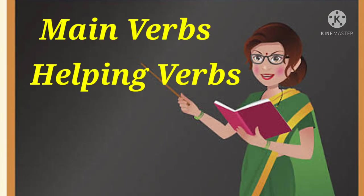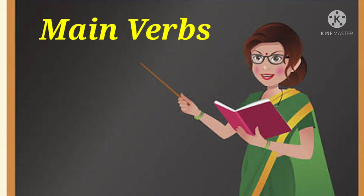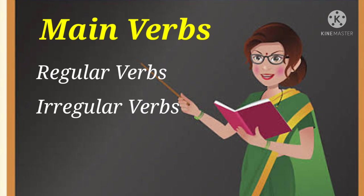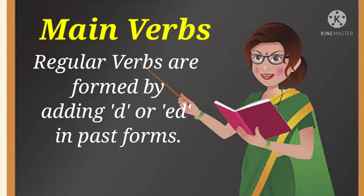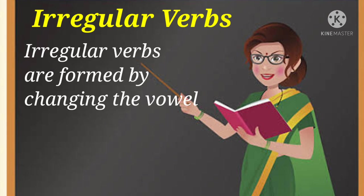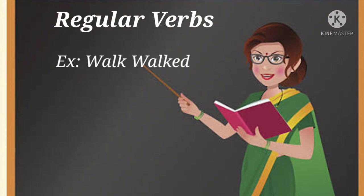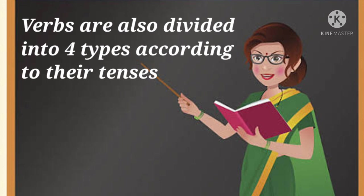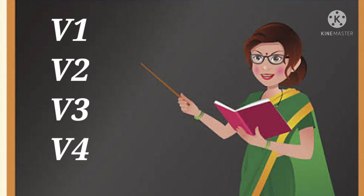Let us now focus on the tables of main verbs and helping verbs. Main verbs are categorized into regular verbs and irregular verbs based on their forms. Regular verbs are formed by adding '-d' or '-ed' in their past forms. Irregular verbs form their past forms by changing the vowel. For example, 'walk' becomes 'walked' in regular verbs, and 'eat' becomes 'ate' in irregular verbs.